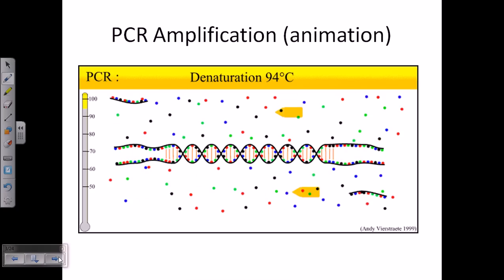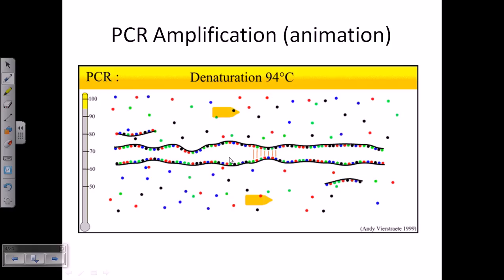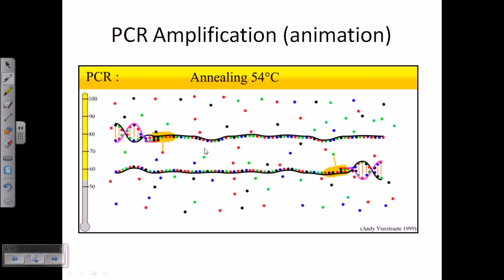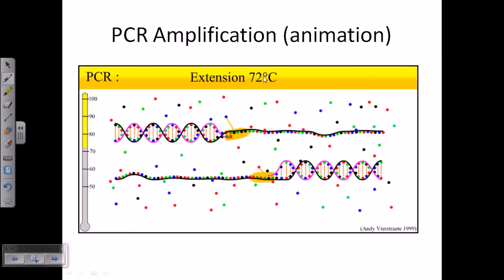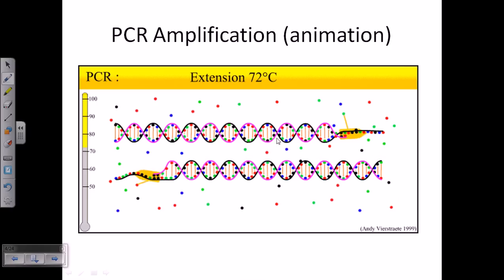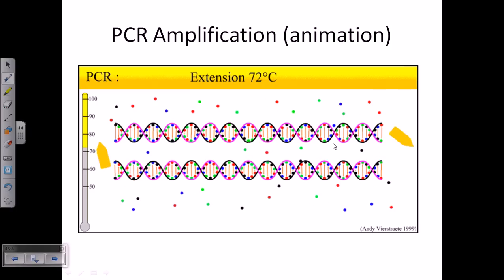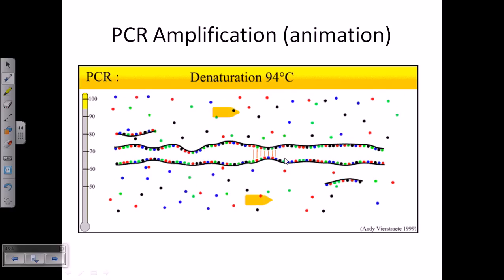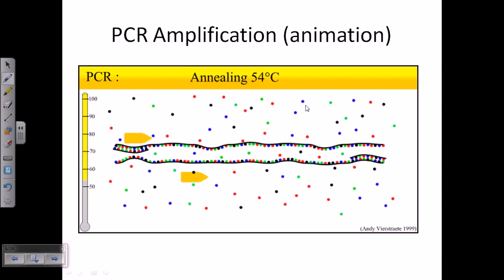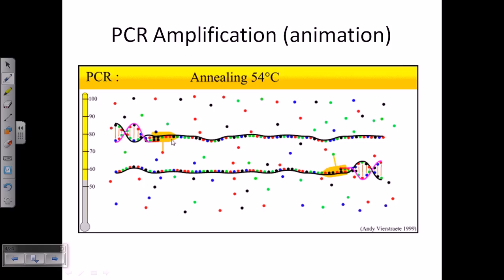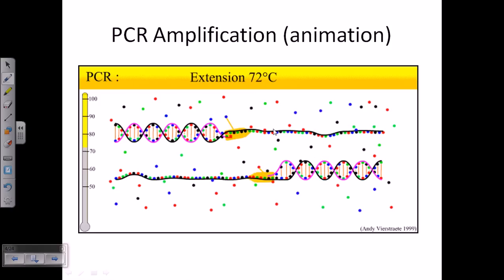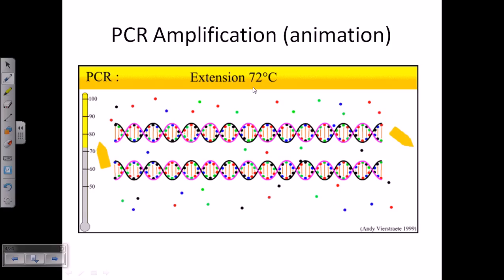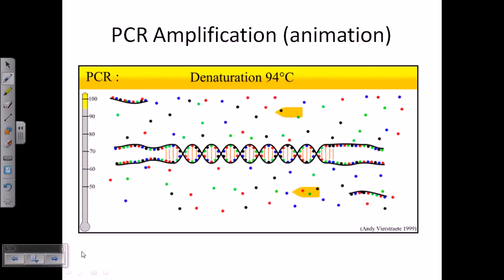To summarize the temperature profile: denaturation at 94 degrees Celsius, then annealing at 54 degrees Celsius where primers bind, then extension at 72 degrees Celsius where the DNA is extended — and this pattern repeats each cycle as visible on the temperature-versus-time graph.